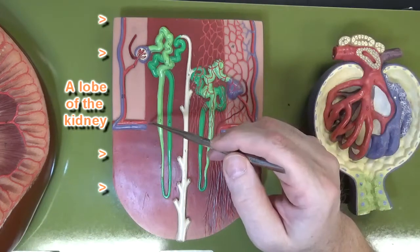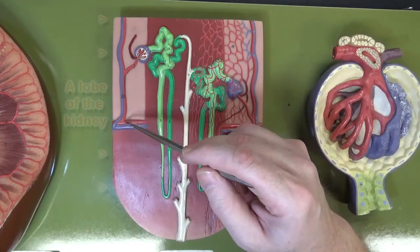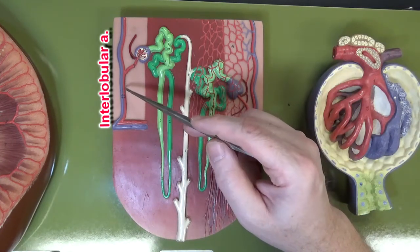Let's look at the blood vessels first. This artery right here would represent an arcuate artery, and then an interlobular artery branching off of that.